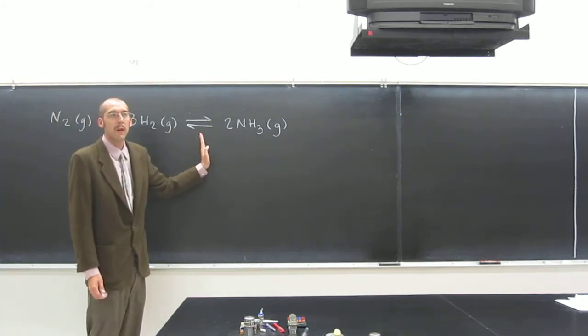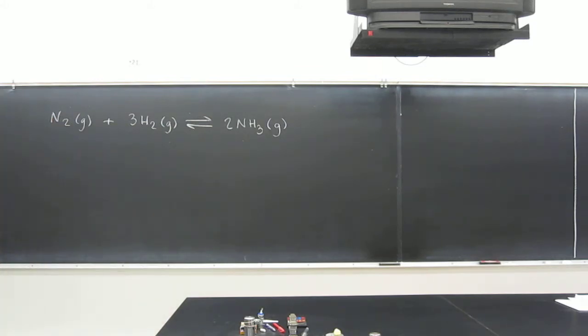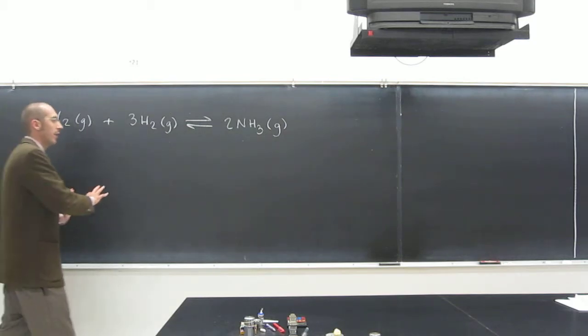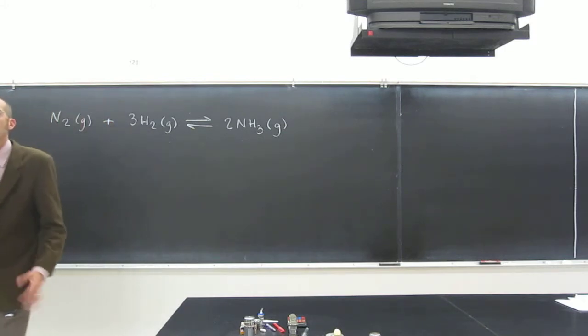Why? Because you've got the equilibrium arrow there. So if you were asked to write the expression for the equilibrium constant, that just means to write what the equilibrium constant would be. Don't put numbers in or anything like that. So the expression,